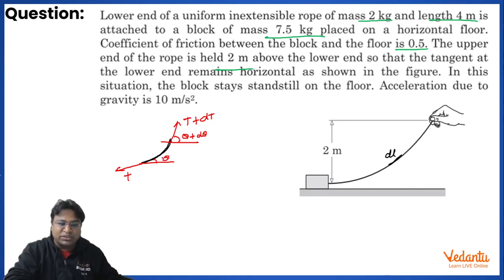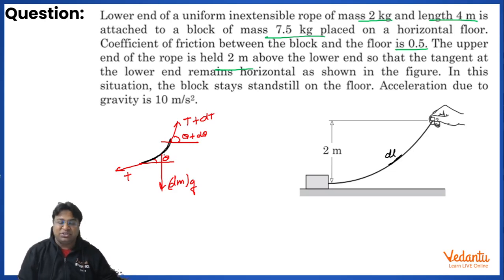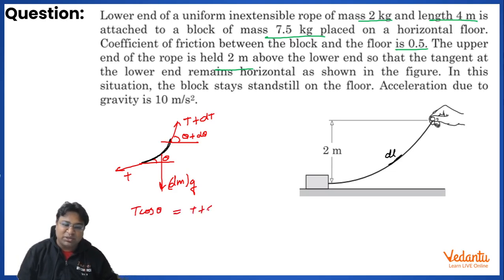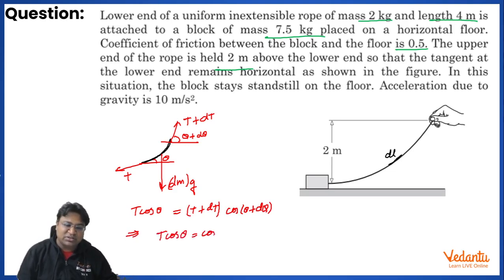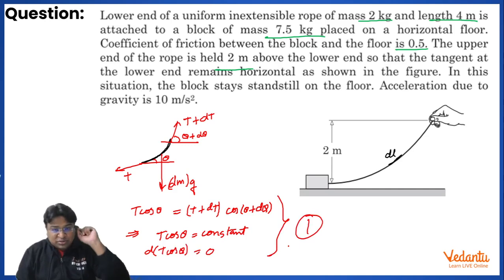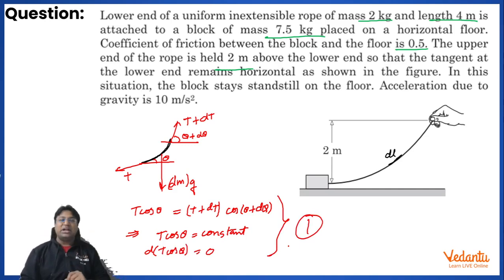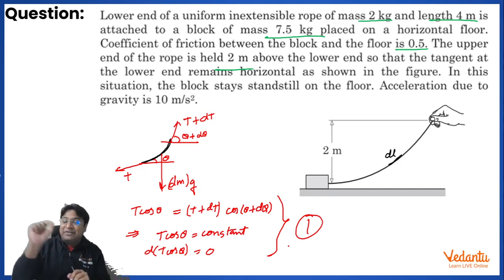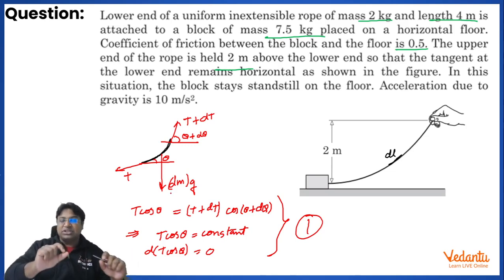The three forces on the element are T, T + dT, and dm·g. For horizontal equilibrium: T·cosθ = (T + dT)·cos(θ + dθ), which means T·cosθ is a constant, or equivalently d(T·cosθ) = 0. This is equation 1 — in a heavy rope, the horizontal component of tension at every point remains the same.